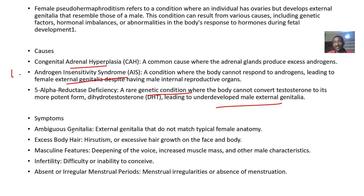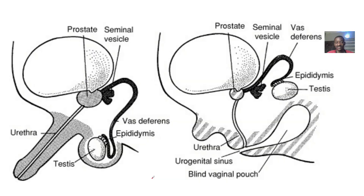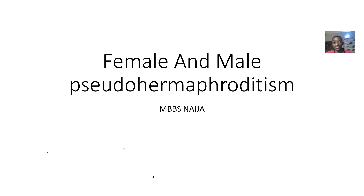Symptoms include genitalia that looks like that of a female but not completely female, excessive body hair, masculine features such as a deep voice and increased muscle mass — but the genitalia is looking like that of a female. Such individuals cannot conceive, and they will not have menstruation because they are not typically women. That was the differences between female pseudo-hermaphroditism and male pseudo-hermaphroditism.